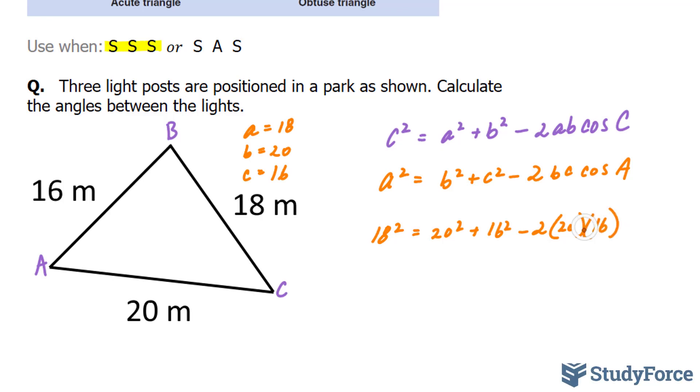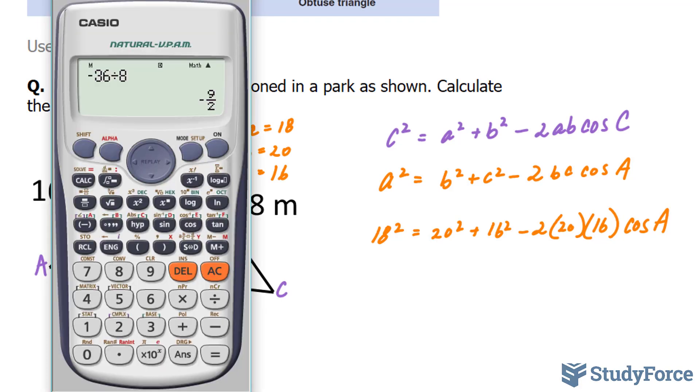Bracket 16, once again, the same reasoning, cosine angle A. Now, I have to simplify the right side. And to do this, I'll use my calculator. We'll start off with 20 to the power of 2 plus 16 to the power of 2, and you stop right there.